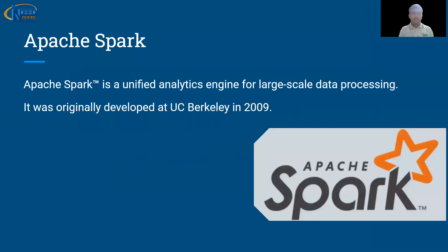Apache Spark is open source — that means it is free of cost, you can use its license without any kind of cost. It is distributed and scalable, and at the same time it is a cluster computing engine. In simple words, you can say it is a unified analytics engine for large-scale data processing. It was developed at UC Berkeley in 2009.